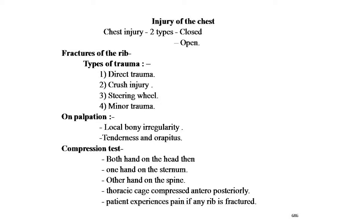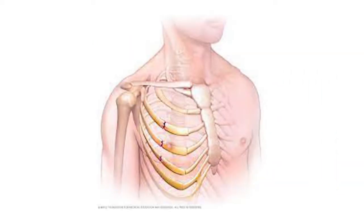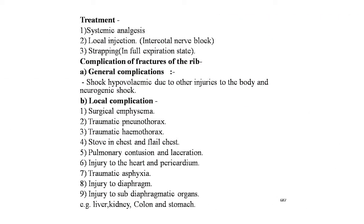On palpation, local bone irregularities, tenderness, and crepitus are findings of a fractured rib. The compression test is usually positive. The patient stands with both hands on the head; the clinician places the base of one hand on the sternum and the other on the spine. The thoracic cage is compressed anteroposteriorly — the patient experiences pain if any rib is fractured. Here is an image showing left-side multiple fractures of the ribs.